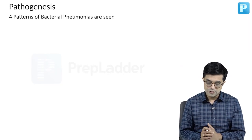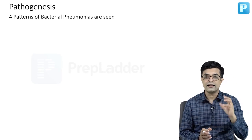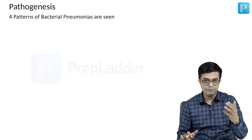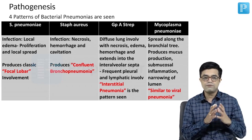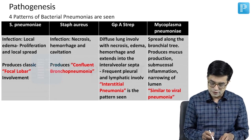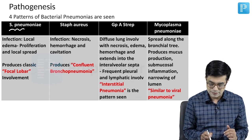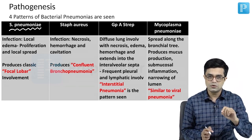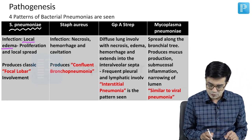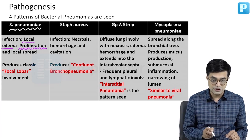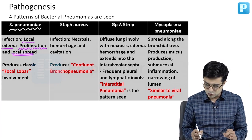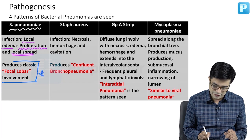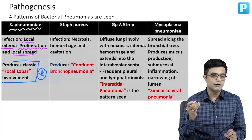When we talk about bacterial pneumonias, there are four kinds of patterns seen inside the lung — combining pathology and pathogenesis. First is Streptococcus pneumoniae, which initially causes local edema, then proliferation of bacteria in that edematous region with local spread. It tends to produce focal lobar involvement — this is the key pattern to remember for Streptococcus pneumoniae.